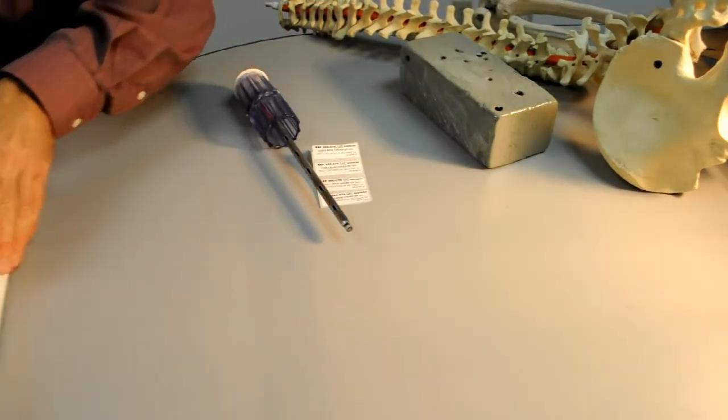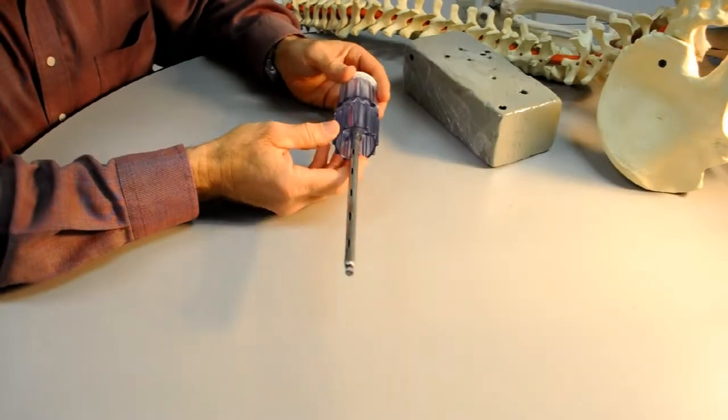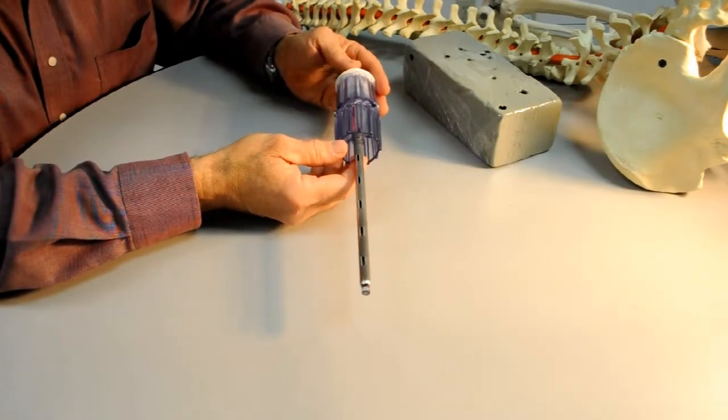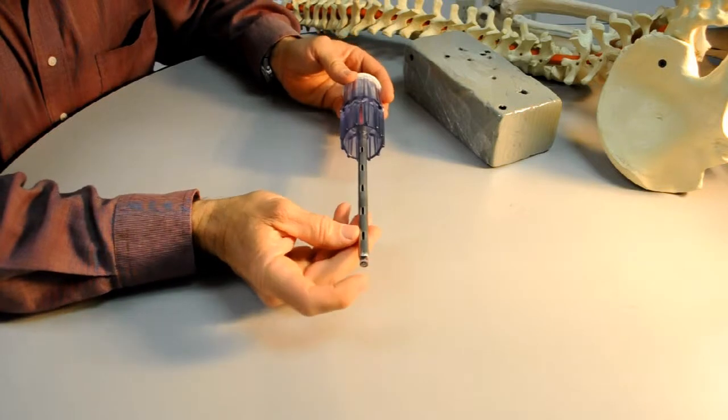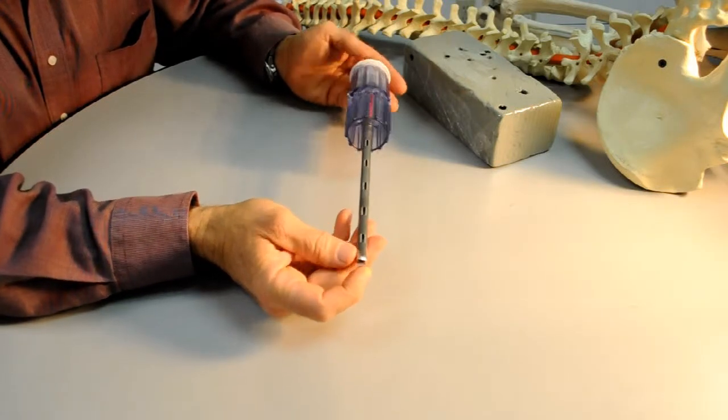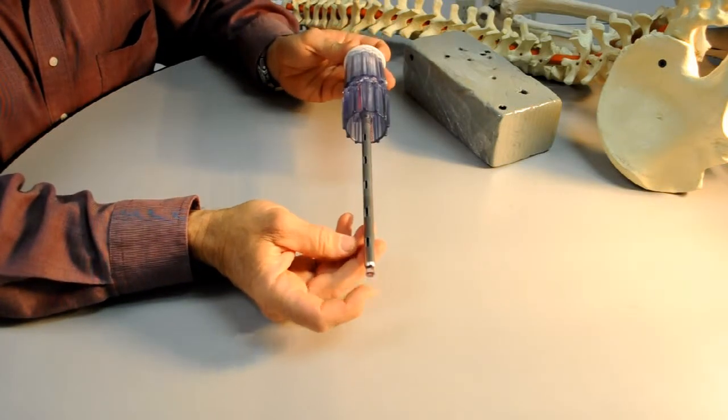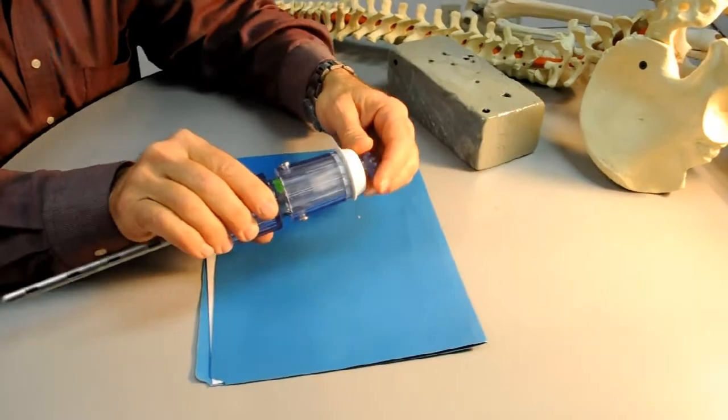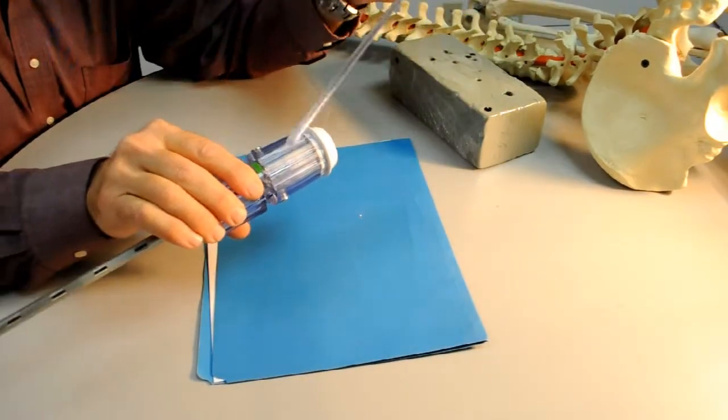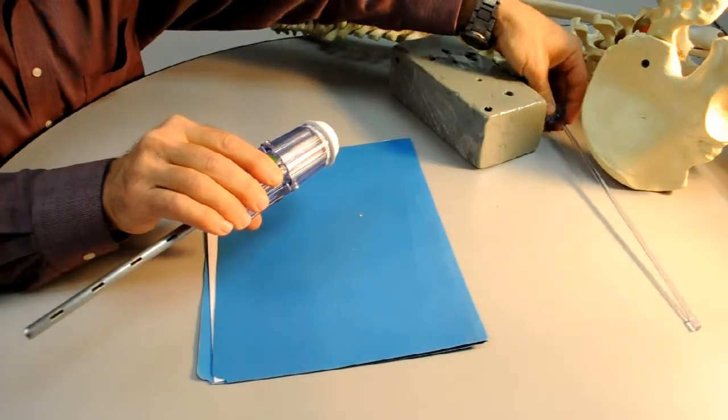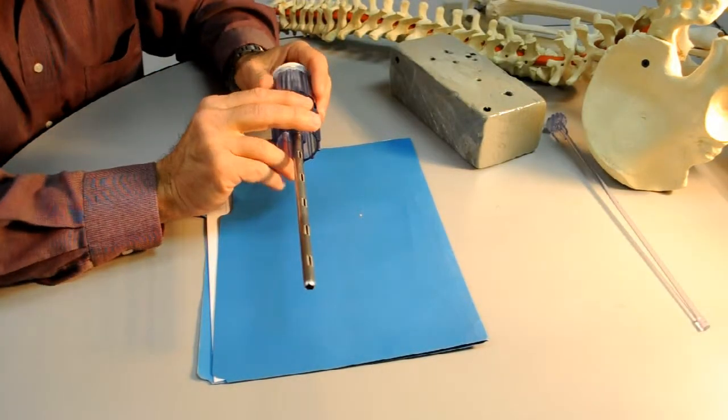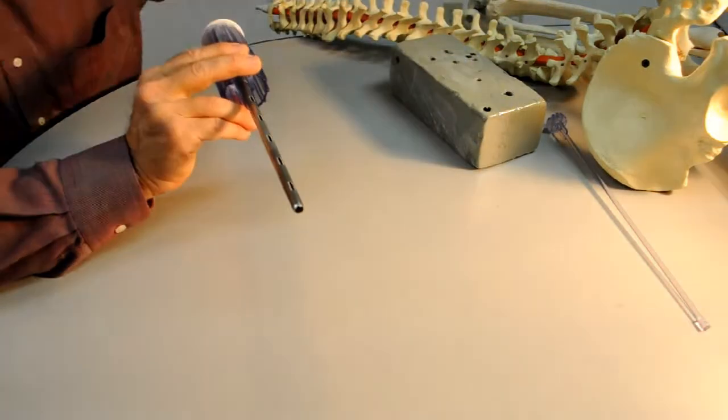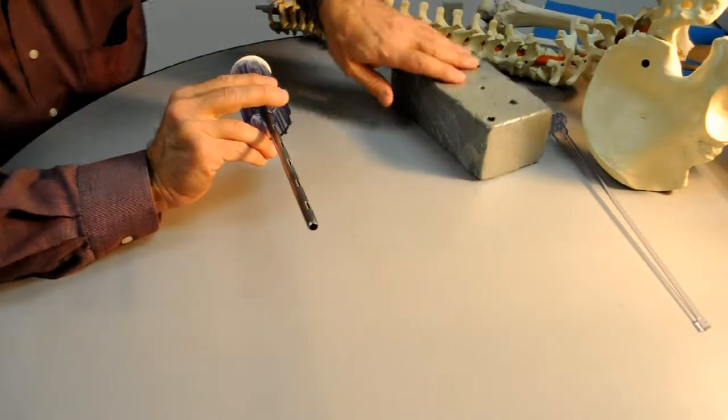Now I'm going to demonstrate the use of the device. After it's been delivered sterilely to the operative field, the extrusion or plunger plastic element is already contained within. The plunger is removed and carefully retained in the operative table area because it's important for extracting the cancellous bone from your harvest site.